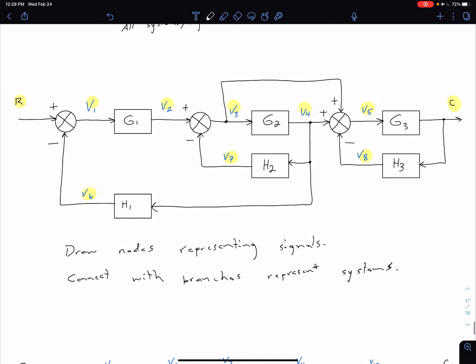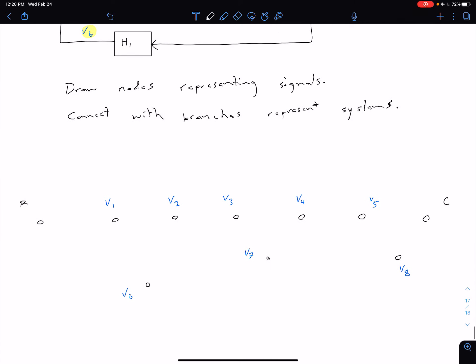So for instance, it's pretty easy to see between V1 and V2. Of course, we just go through our G1 block. So we just come down here, and we say from V1 to V2, we have this, which is just G1.